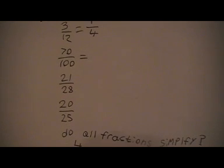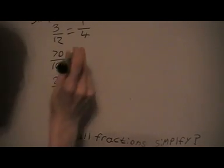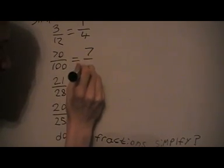This next one here, I've got 70 over 100, and I can see that the highest common factor of both of these is 10. So I'm going to divide the top and the bottom by 10, and get 7 tenths.